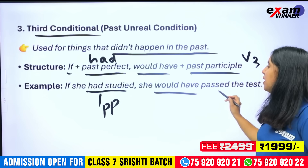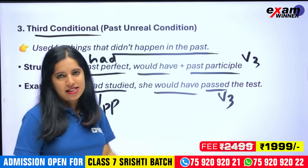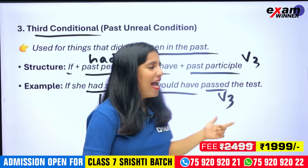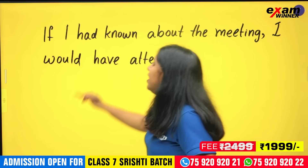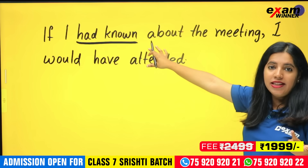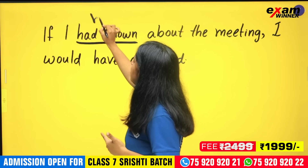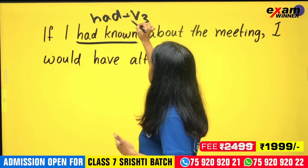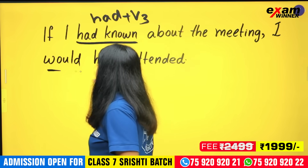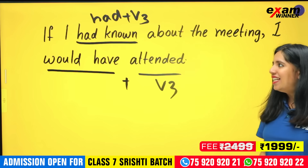Would have — past participle. V3 form. For example: If I had known about the meeting, I would have attended. 'Had known' is had plus V3 — past perfect. 'Would have attended' is would have plus past participle. If I had attended — would have done — clear?